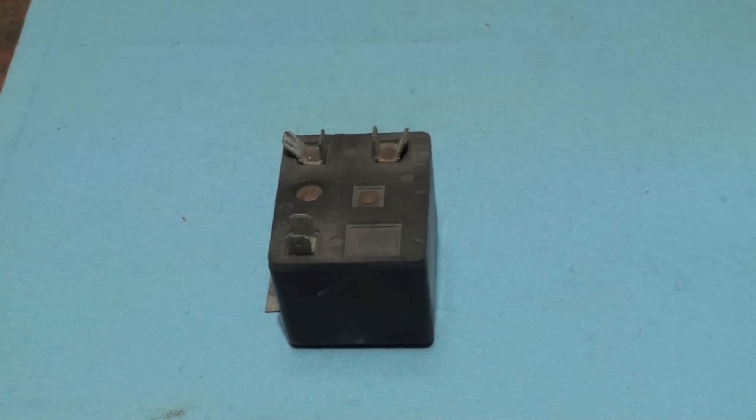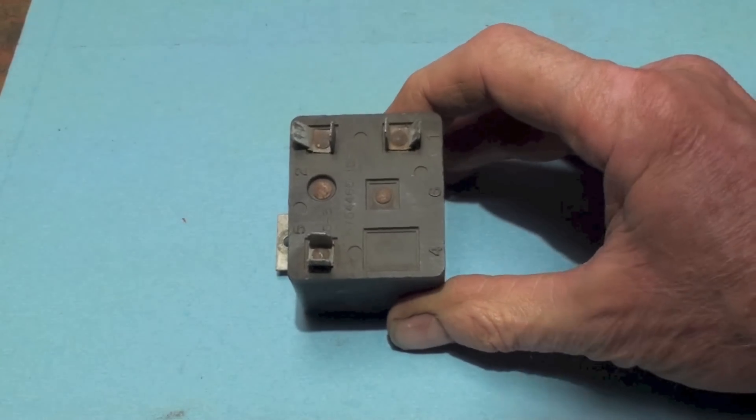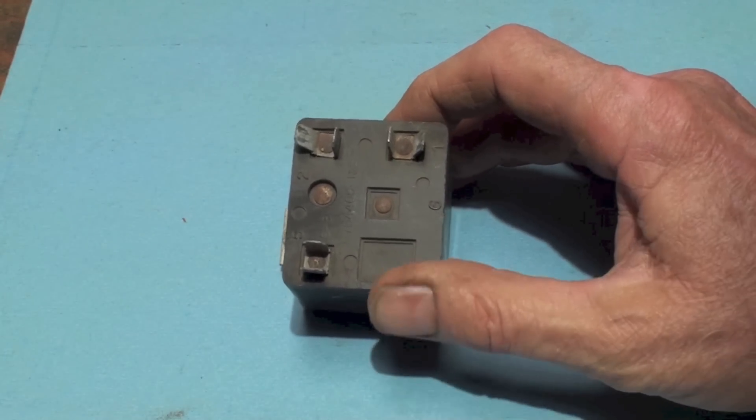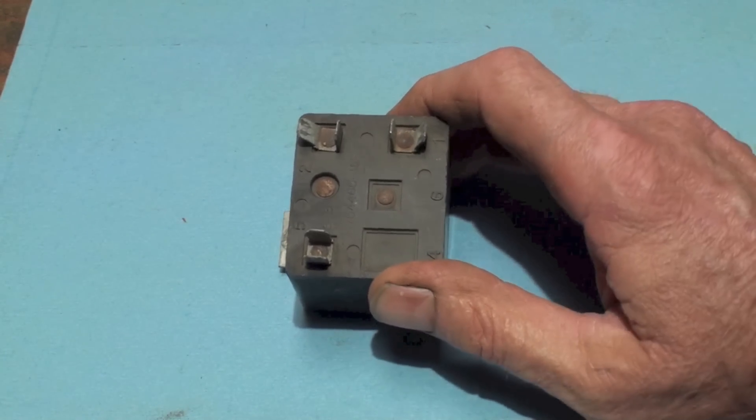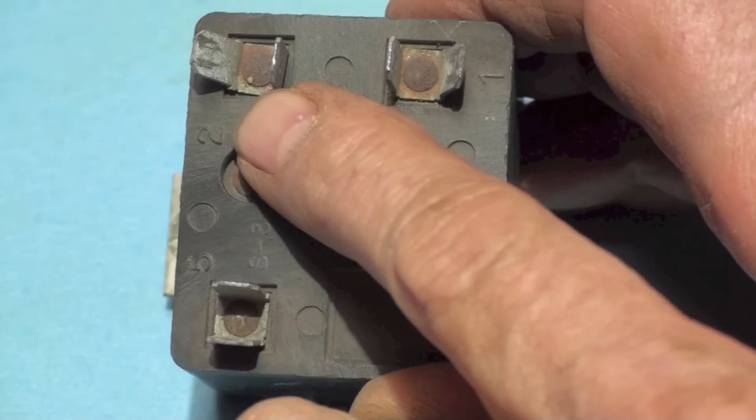The potential relay is a very common relay used in hard start compressors for refrigeration and air conditioning. It has three usable terminals on it. If you look at this one, it's got a five right there, it's got a two right there, and it's got a one.